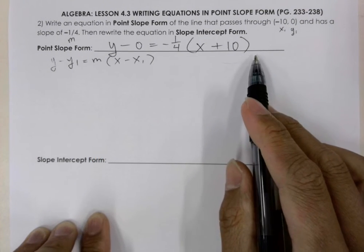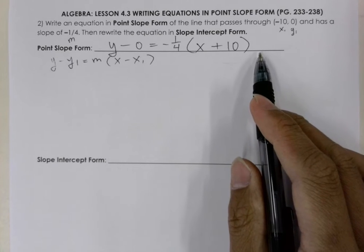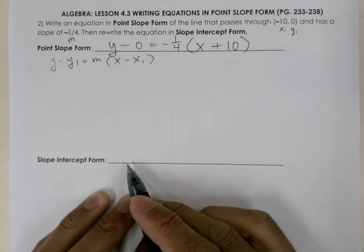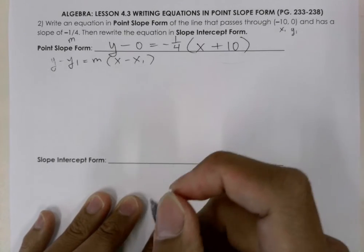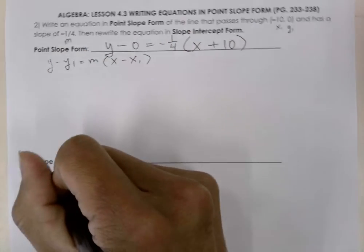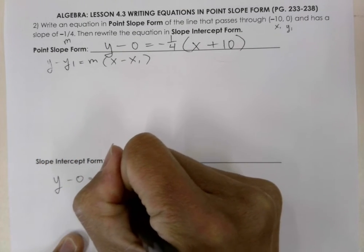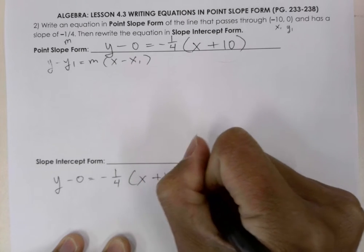So here is the equation in point-slope form. And now we want to write it in slope-intercept form. And to do that, we'll go ahead and rewrite our equation here. y minus 0 is equal to negative 1 over 4 times the sum of x plus 10.